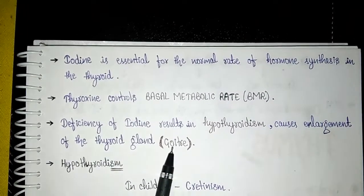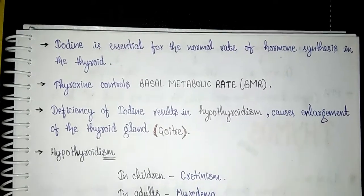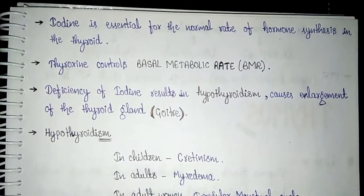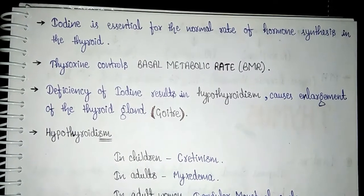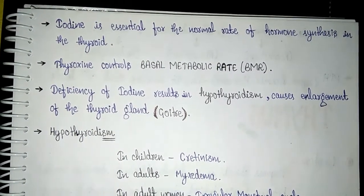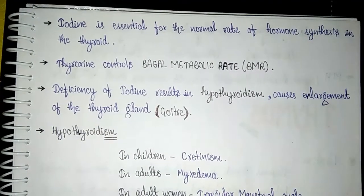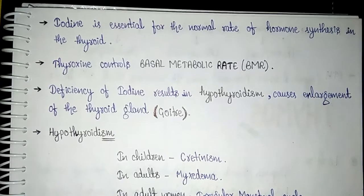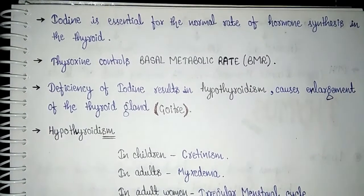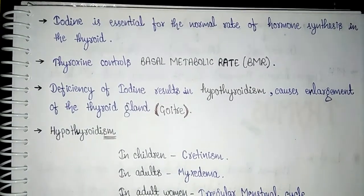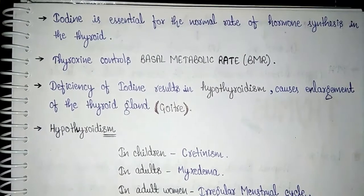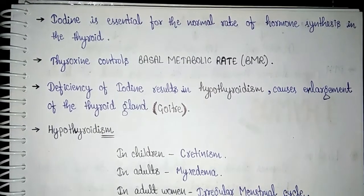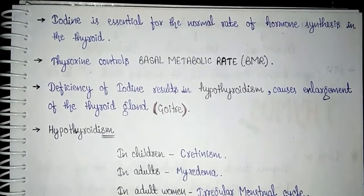If there is a deficiency of iodine in the body, thyroxine will not be produced, leading to a condition called hypothyroidism. In this condition, the thyroid gland becomes enlarged and the neck region swells. This condition of enlargement of the thyroid gland is known as goiter.